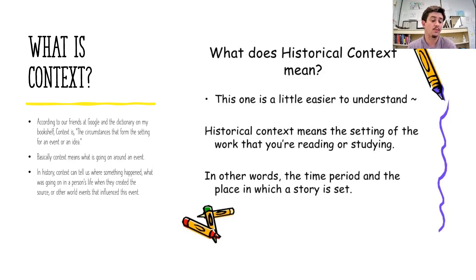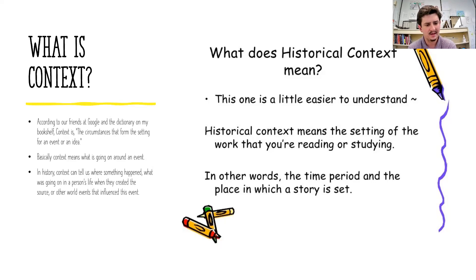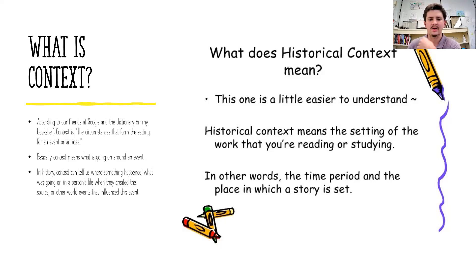In history, context can tell us where something happened — where in the world it happened — what was going on in that person's life or in the world at large when they created their source, and what other world events were happening. Historically, context just means looking at the setting of the work you're reading or studying — in other words, the time period and the place where it's happening.